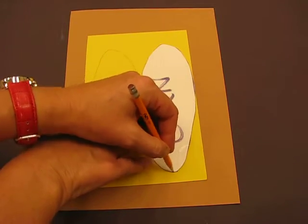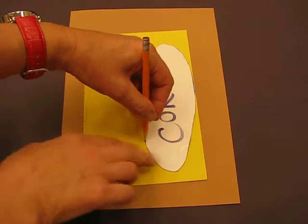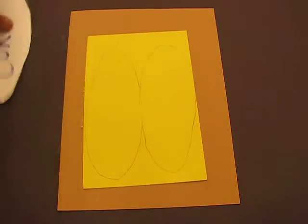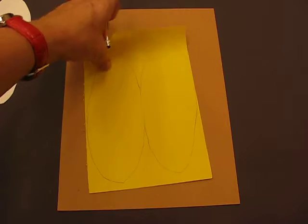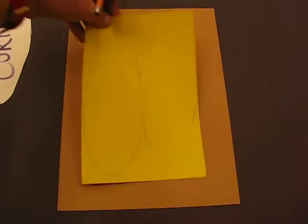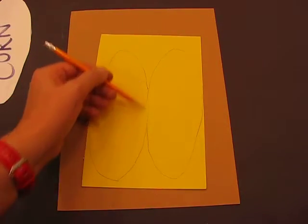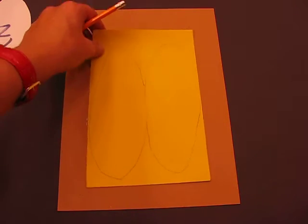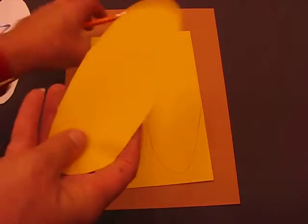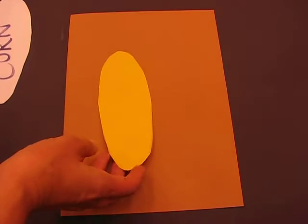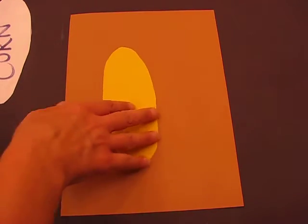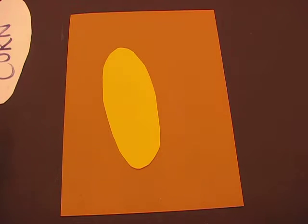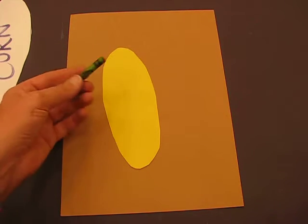Once you've traced those shapes out you're going to get your scissors, and you can see there I've got two corn on the cob shapes. With your best scissor control you're going to cut those two shapes out and that's going to be the start of your corn. When you've got them cut out they should look like that.